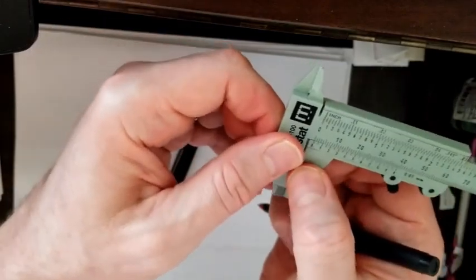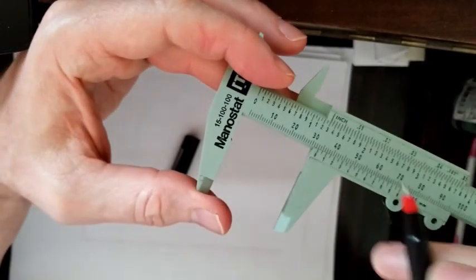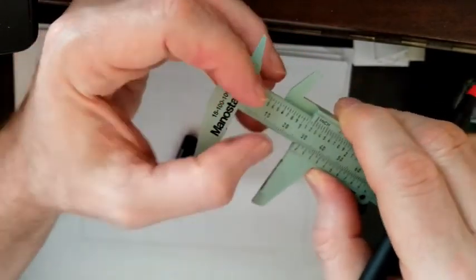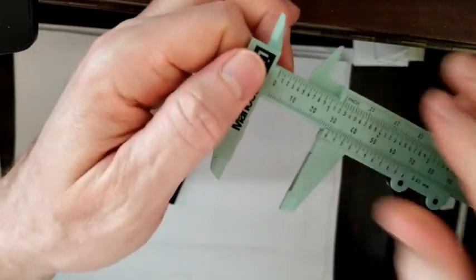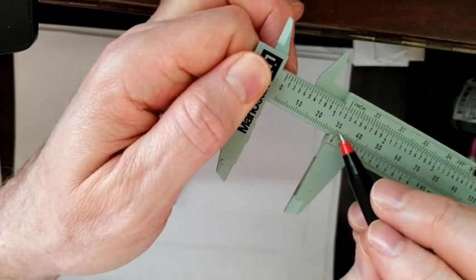So as I expand it, the way that the vernier caliper works is you look to see where the zero lines up. You look to see where this zero lines up. That zero is lined up between 30 and 31.